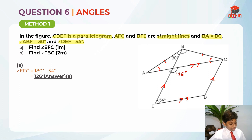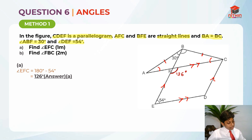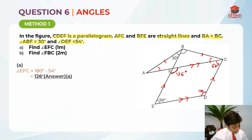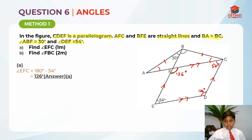Now we can list the angles we know. Since opposite angles of a parallelogram are equal: the angle opposite 54 degrees is also 54 degrees, and the angle opposite 126 degrees is also 126 degrees. Now we can move on to solving part B.